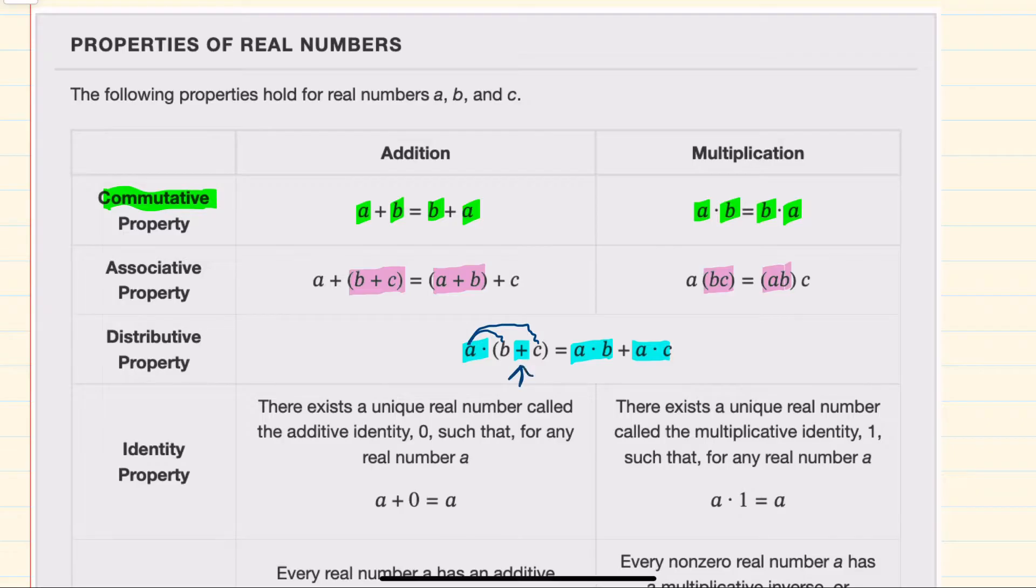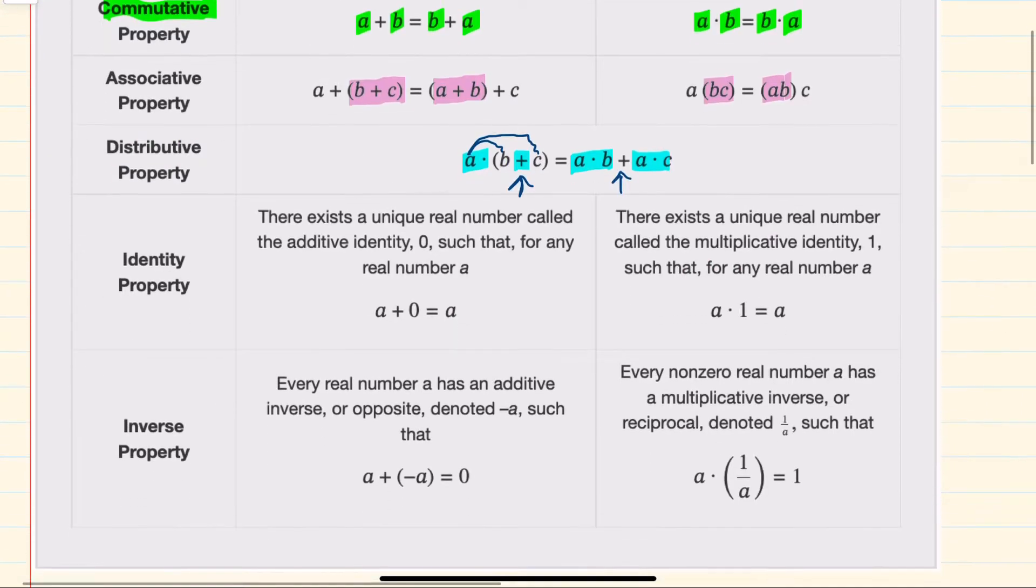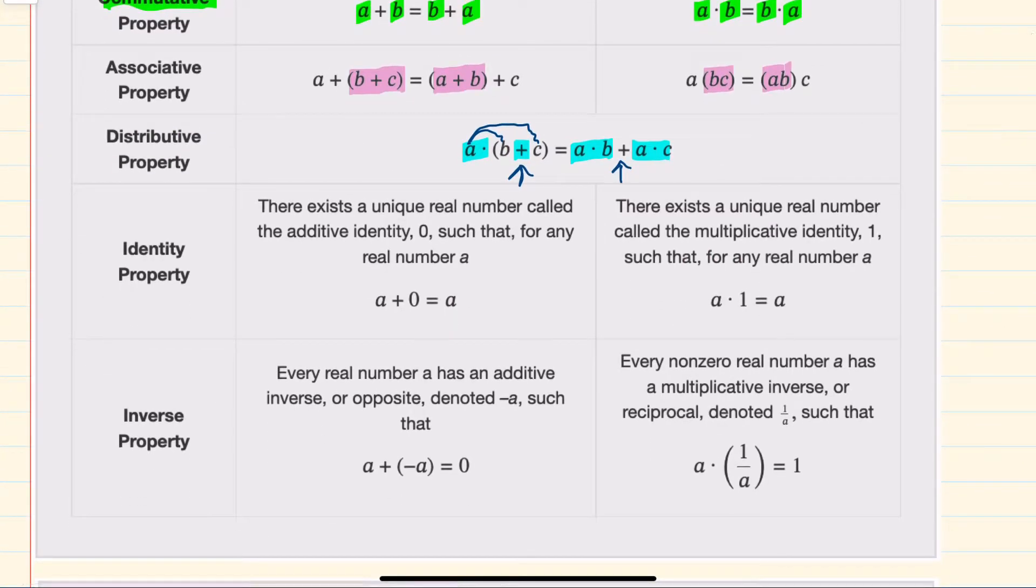And then for our identities, identities are about ending up with the same thing you started with. For addition, I can add zero to any number, and this won't change that value. So adding zero to a still gives me a. The multiplication version of this is multiplying by one. If I take a number and multiply by one, I'll end up with that same number.